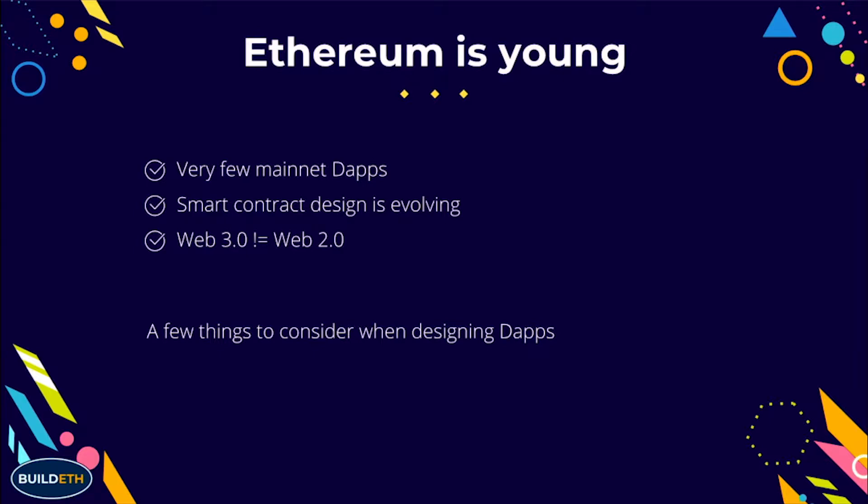Secondly, smart contracts are evolving constantly. There are more patterns and more designs being produced every single day — things like gas tokens, TCRs, and proxy contracts. Apart from that, Solidity's language is constantly evolving. Solidity 0.5 has the compiler completely gutted, and there are new languages like Viper and Bamboo coming out that we can utilize as well.